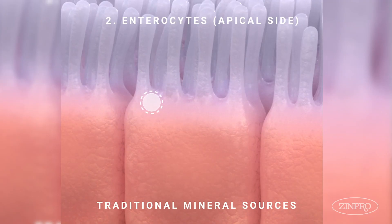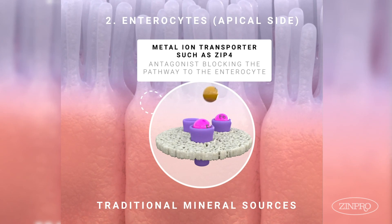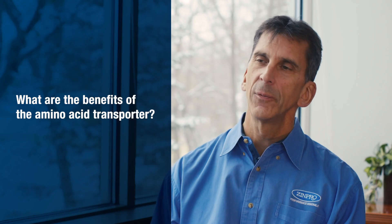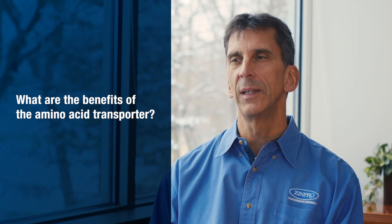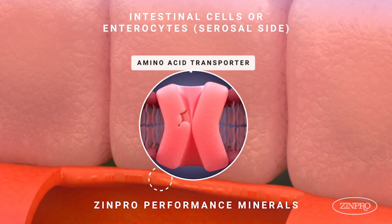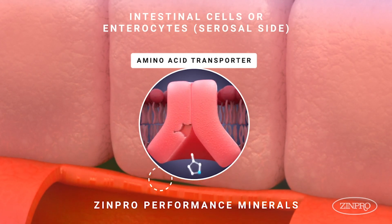That's one type of antagonism. The other type of antagonism actually blocks the inorganic transporters and prevents the mineral from being taken up into the enterocyte. The benefit of the amino acid transporters is that it gives a unique way to deliver the mineral to the animal. We are not regulated the same way as the inorganic transporters and we are not affected by antagonists, so we go through uptake and absorption into circulation.